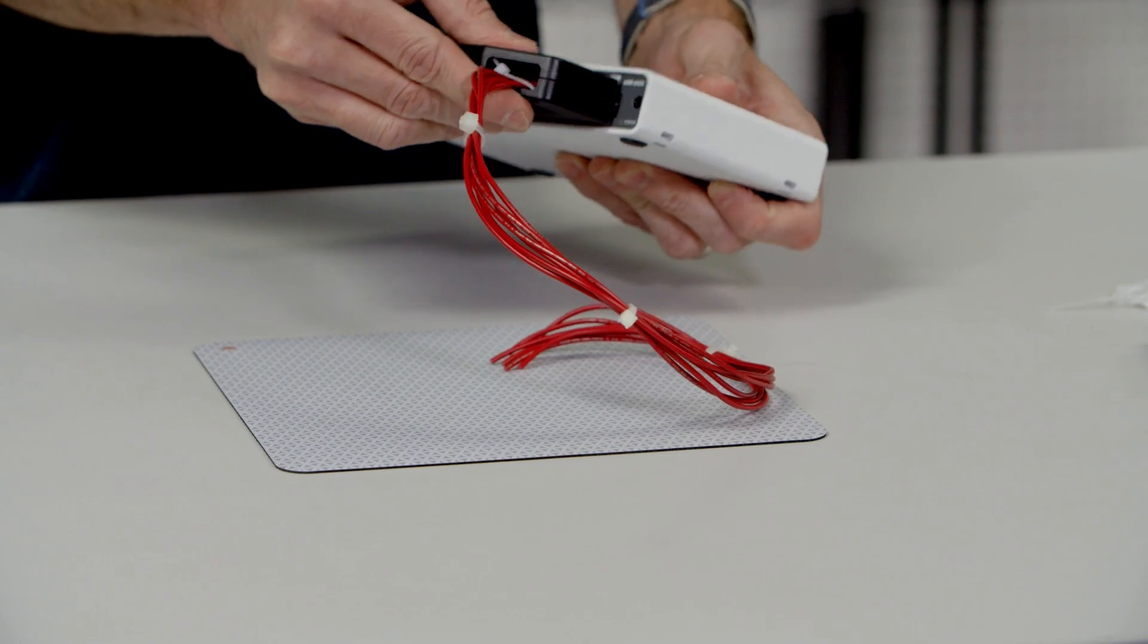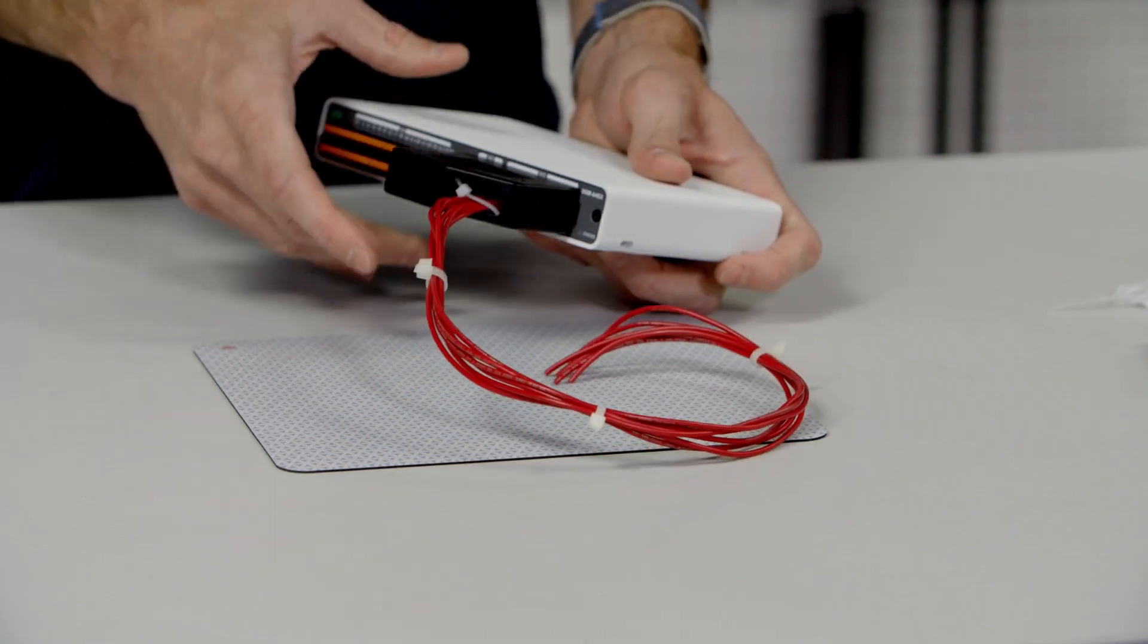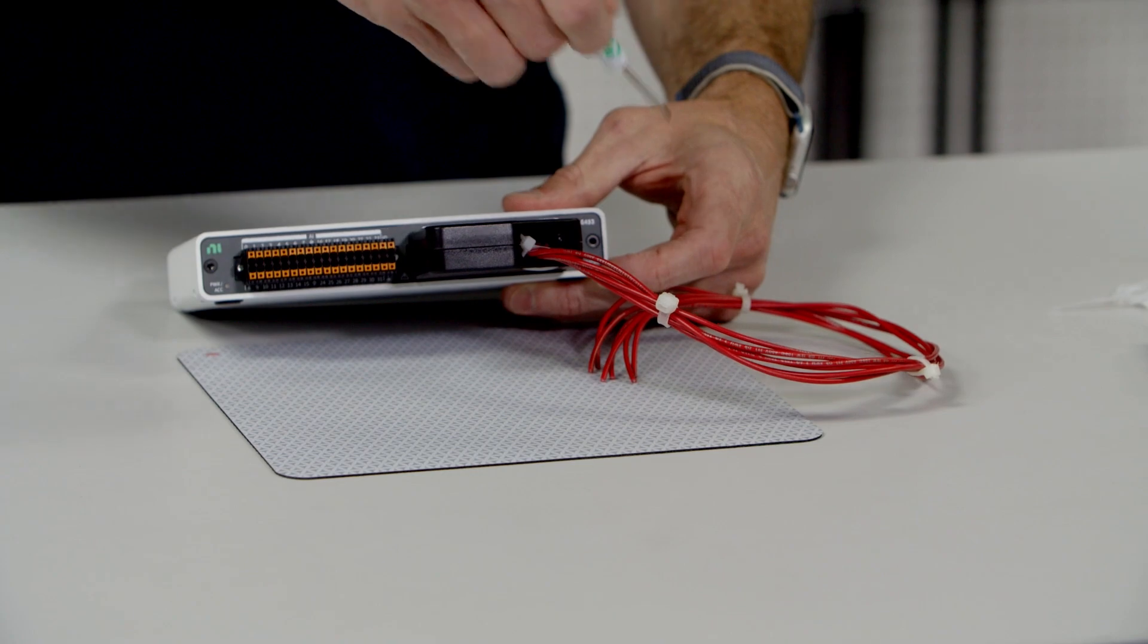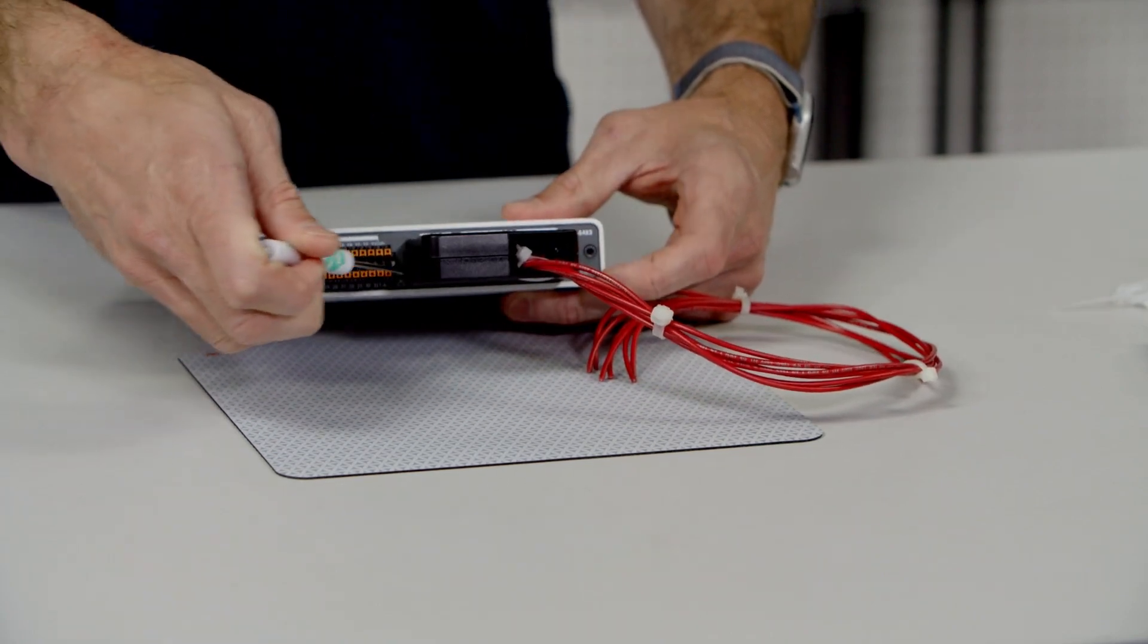And I'm going to plug this into MEODAC. And again, it's keyed. So it only goes one way. And then there's two screws on either side. So I could lock this down here and here.